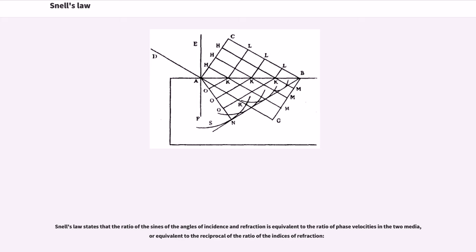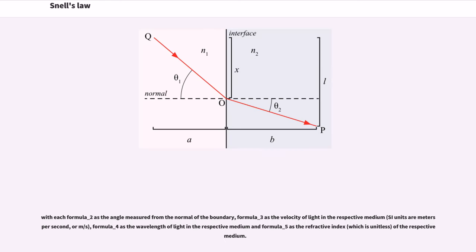Snell's Law states that the ratio of the sines of the angles of incidence and refraction is equivalent to the ratio of phase velocities in the two media, or equivalent to the reciprocal of the ratio of the indices of refraction. With formula underscore 2 as the angle measured from the normal of the boundary, formula underscore 3 as the velocity of light in the respective medium, formula underscore 4 as the wavelength of light in the respective medium, and formula underscore 5 as the refractive index of the respective medium.